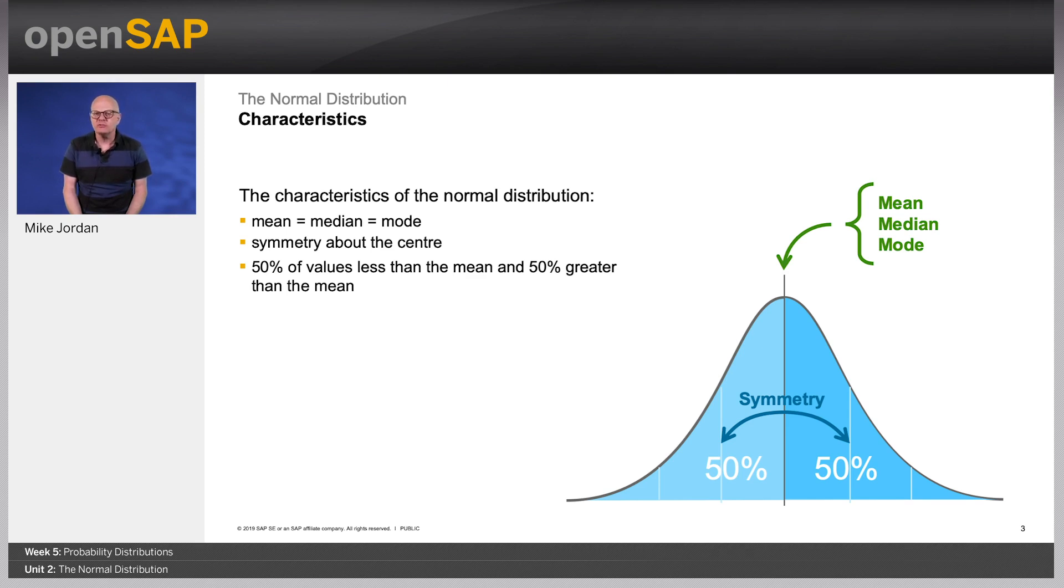The location of a normal distribution is determined by the mean and the spread is determined by the standard deviation. Distance away from the mean is measured in standard deviations, also known as z-scores.